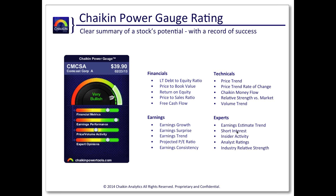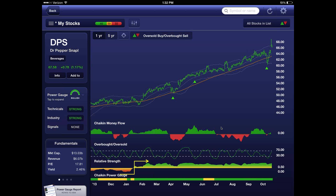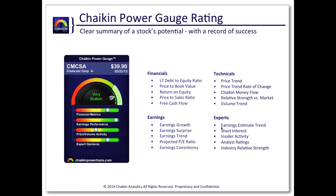When short sellers are increasing their short positions, that has a bearish impact on the Power Gauge. And we watch what insiders are doing from a buy perspective. When insiders are buying their own stock, they're sending you a powerful message — they already have options, big salaries, golden parachutes. So if they take out their wallet and buy stock with their own money, they're telling you that stock's going up now. When insiders are buying, that's a very bullish component of the Power Gauge Rating.